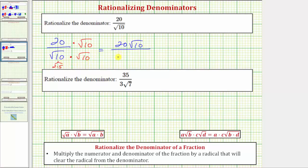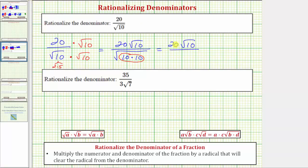Multiplying in the denominator, we have the square root of 10 times the square root of 10, which equals the square root of 10 times 10. Notice now we have a perfect square under the square root, and therefore this will simplify perfectly. So we have 20 square root of 10 over the square root of 10 squared, which simplifies perfectly to one factor of 10.